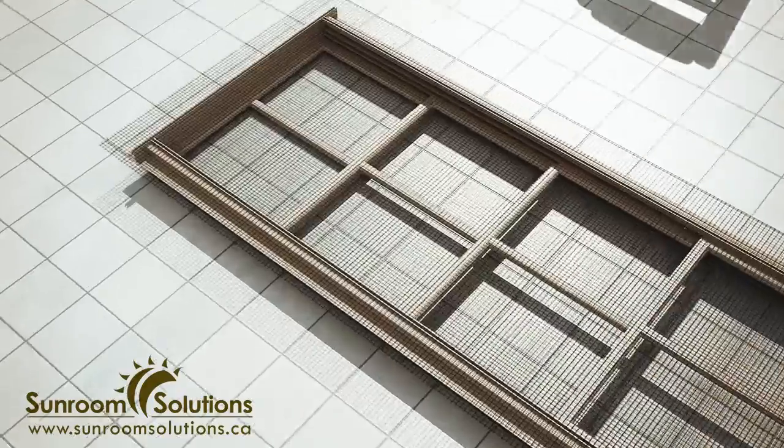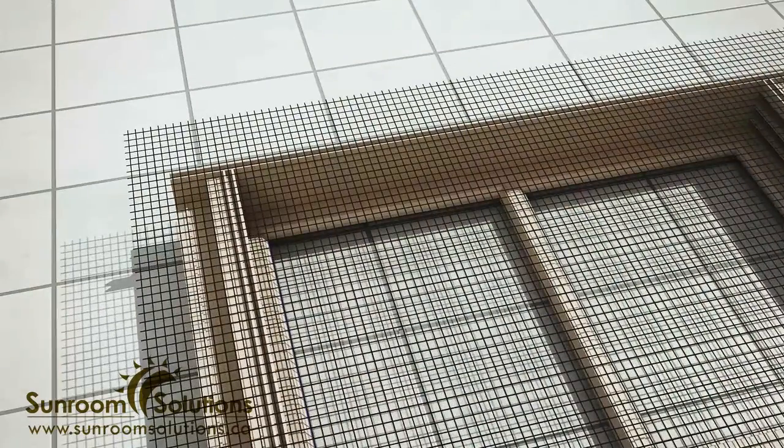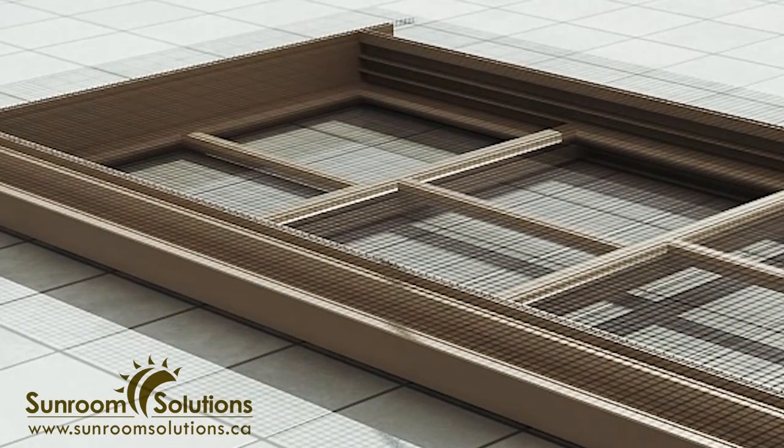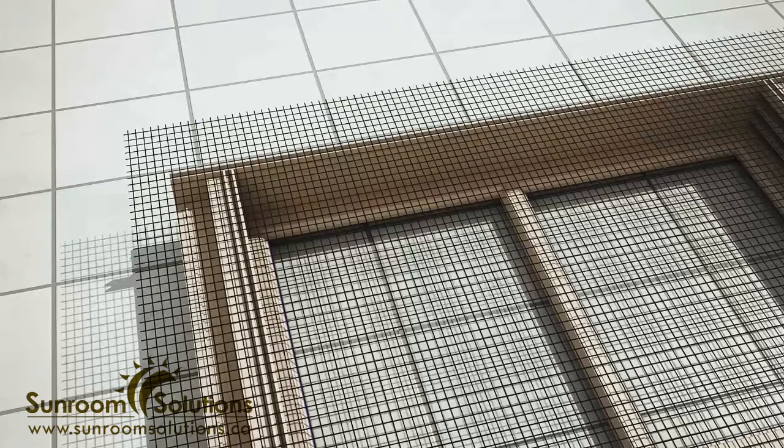Push the screen into the channel with the spline, starting at the top of the window. Use the spline roller to roll over the spline, forcing it into the channel. The spline will hold the screen in place as you work your way around the frame.